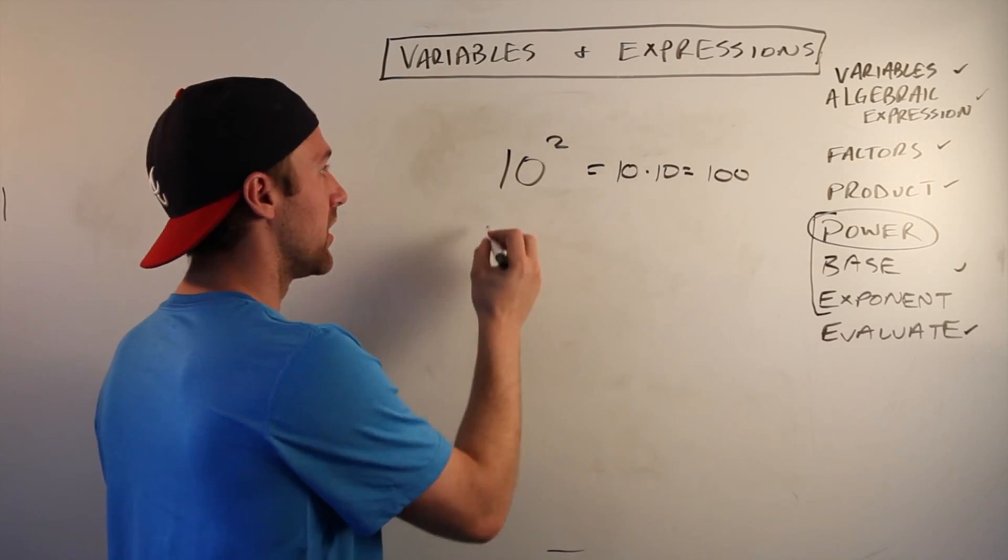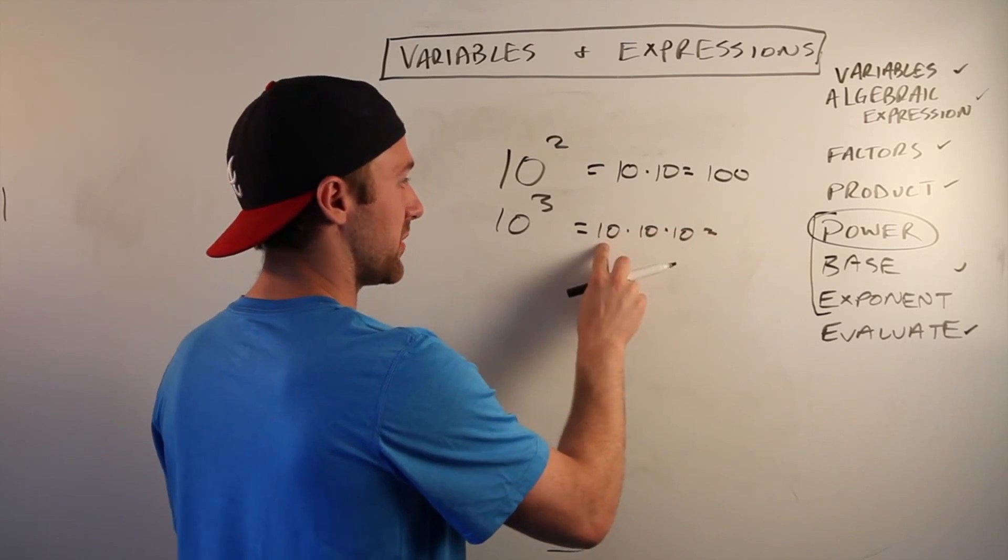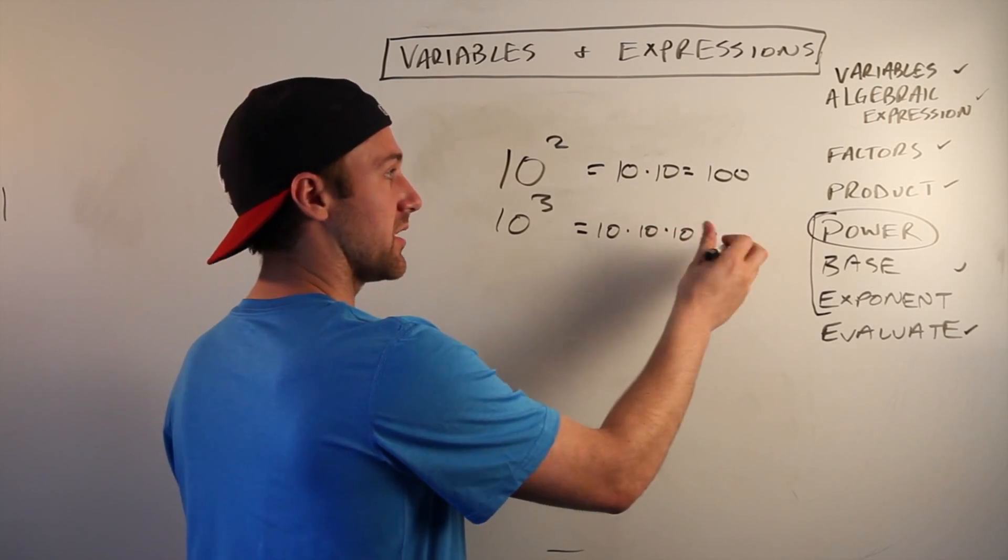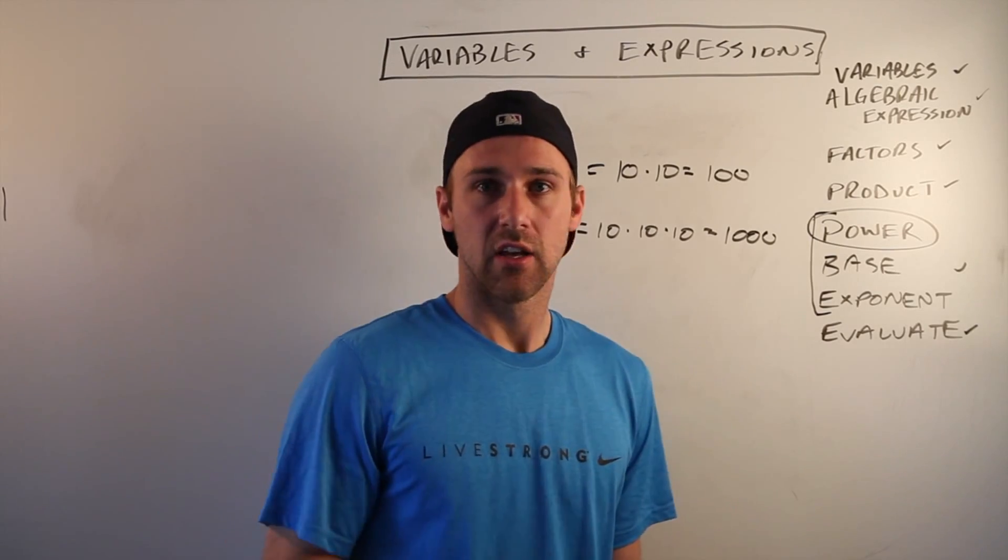Say you're doing 10 cubed, 10 to the third. That's 10 times 10 times 10, which would be 10 times 10 is 100, times 10 is a thousand. Now I'm going to show you a shortcut for finding an answer when you have 10 to a power.